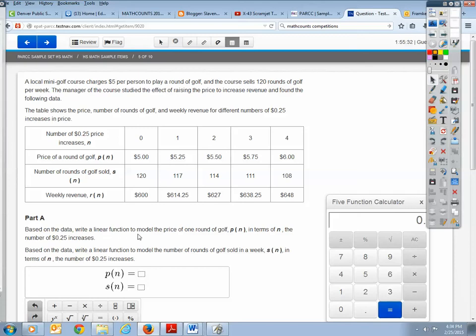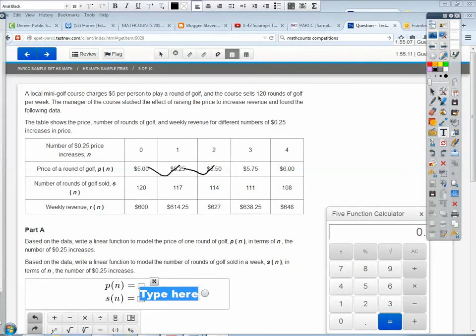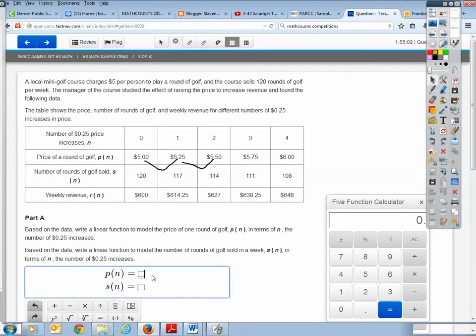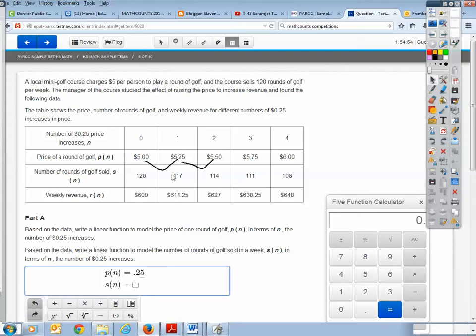So based on the data, write a linear function to model the price of one round of golf, that's P(n) in terms of N, the number of $0.25 increases. So the first thing I'm going to do is I'm going to analyze the table. And so I notice that it is going up by $0.25. So that means that I have a slope of $0.25 because for every increase of 1 in the price increases, I have a $0.25 increase in my cost or in my revenue. And then that is multiplied by N because this depends upon, or the increase depends upon how many times I've increased.